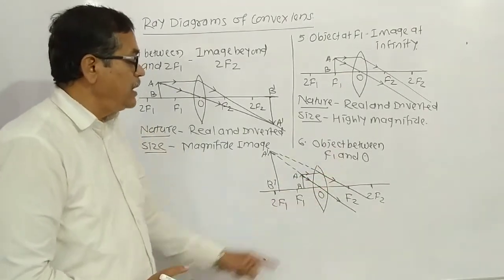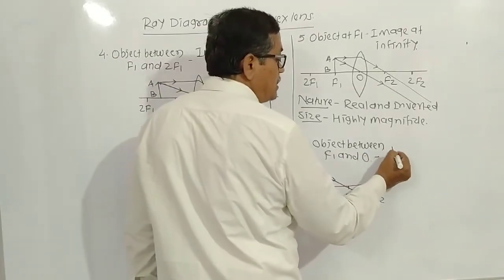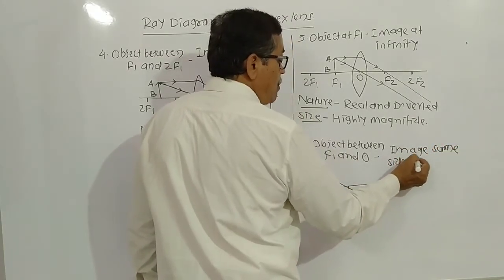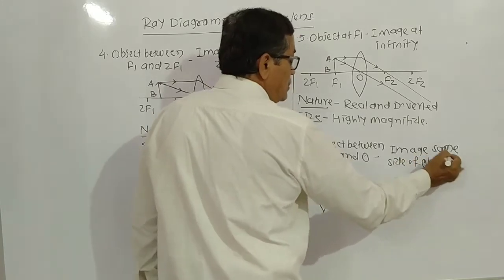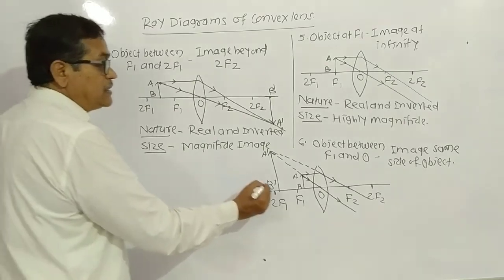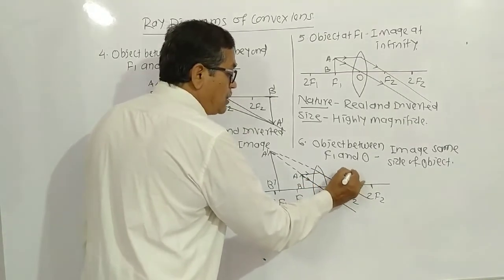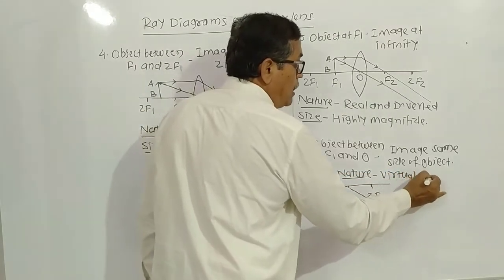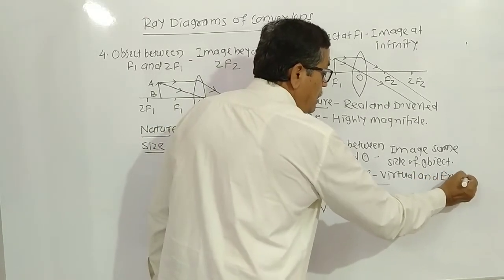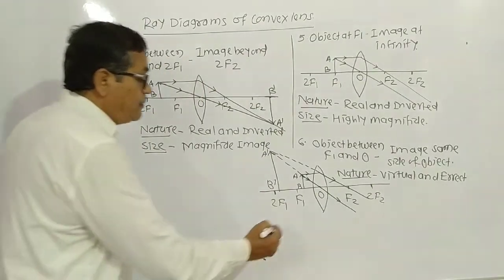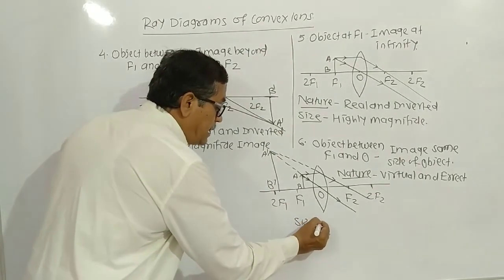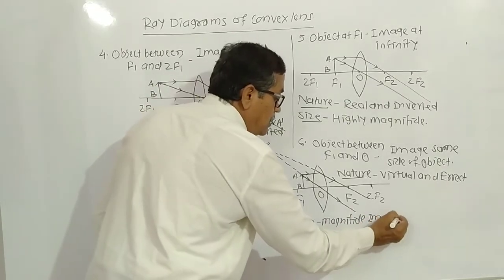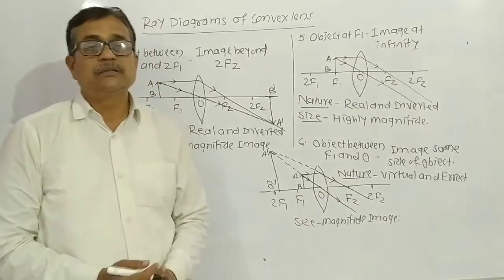So object between F1 and O — image is on the same side as the object. The nature of image is virtual and erect, not a real image. The size is magnified — it is bigger than the object, larger than the object.